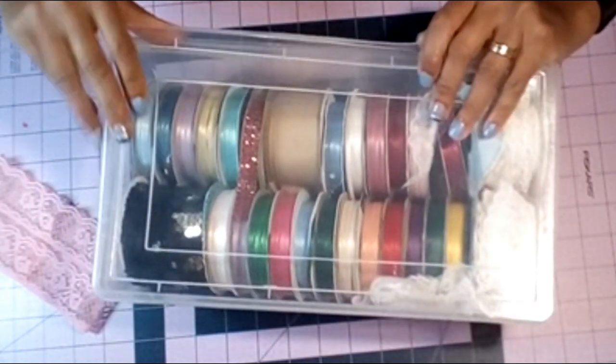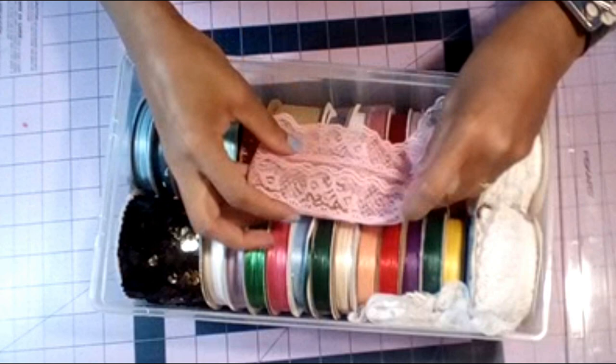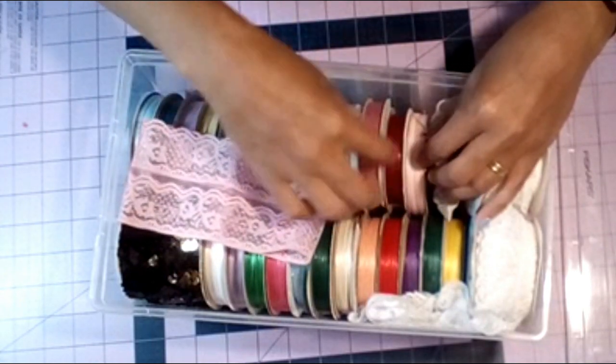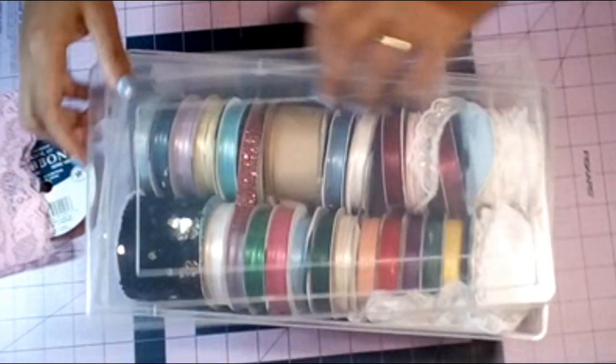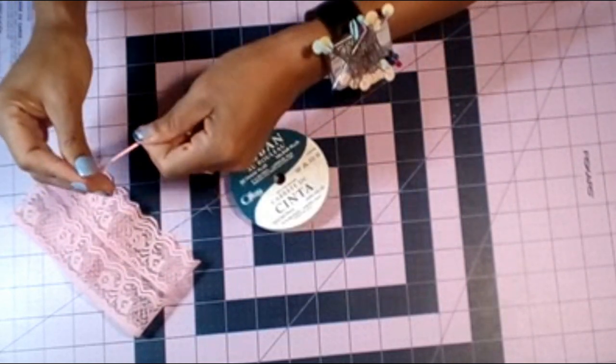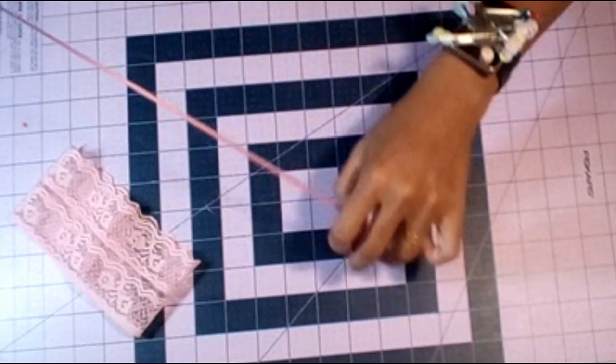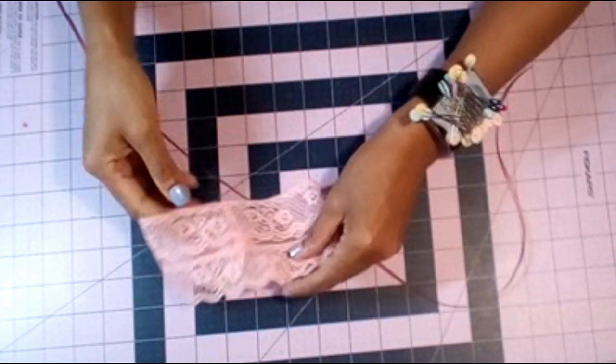Now just gather it from the middle. You don't have to sew it in your sewing machine. This is my ribbons box where I keep my ribbons. I picked the ribbon that I would like to add to my bow.